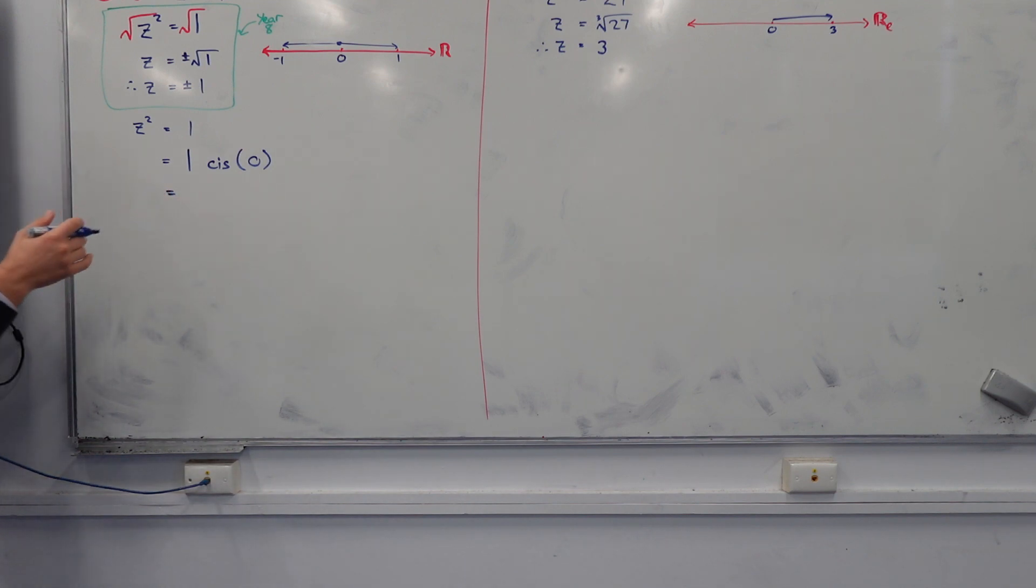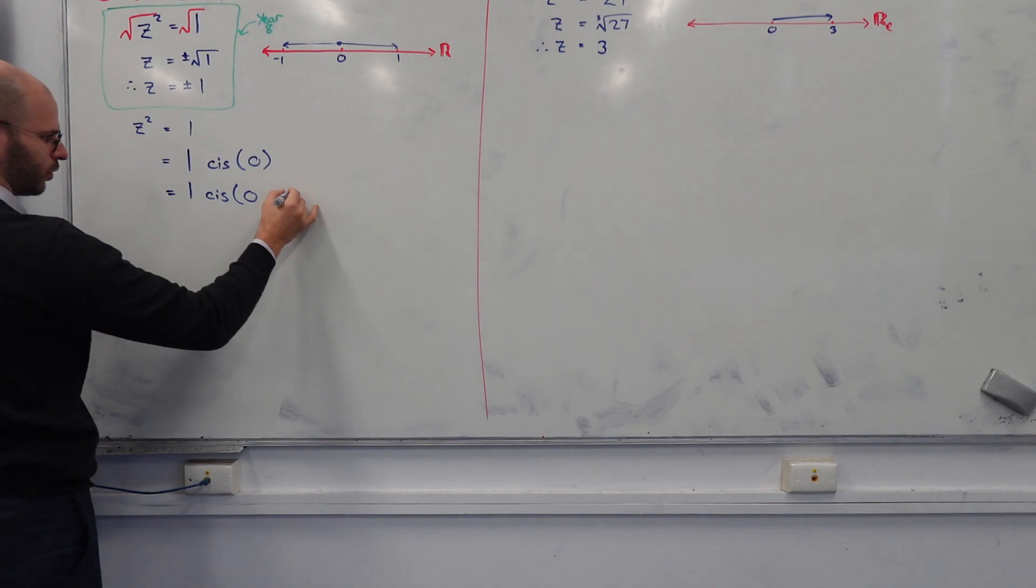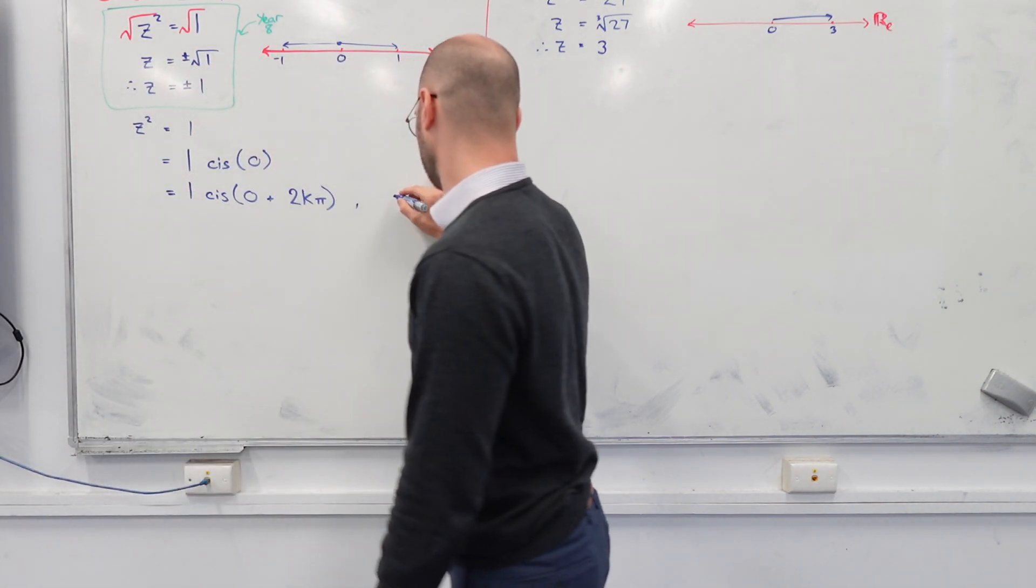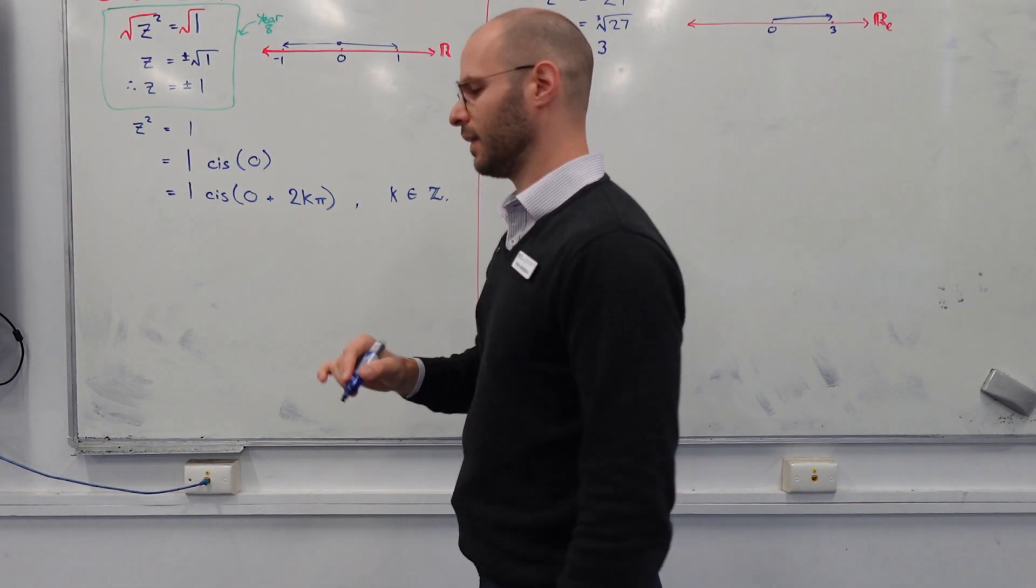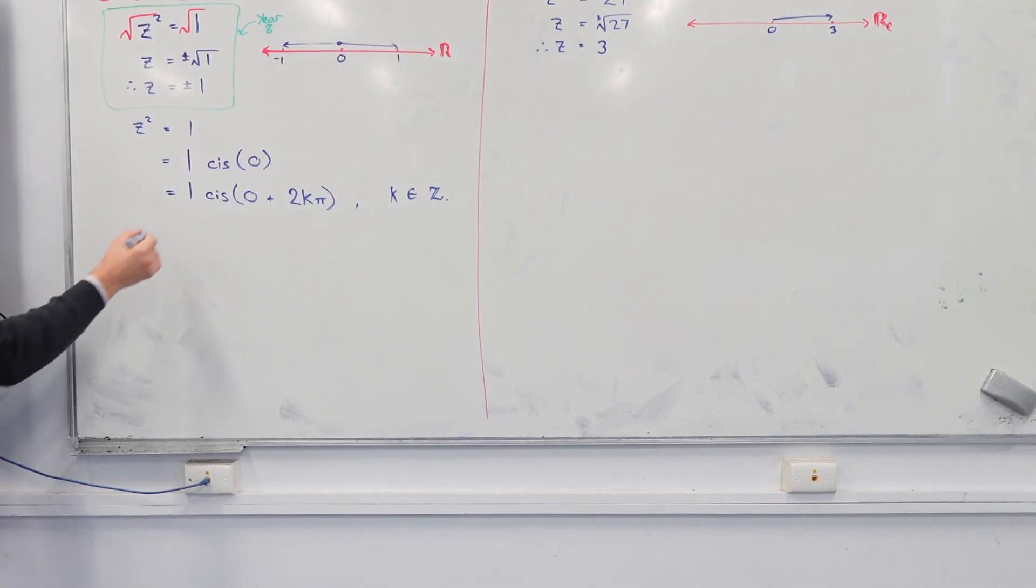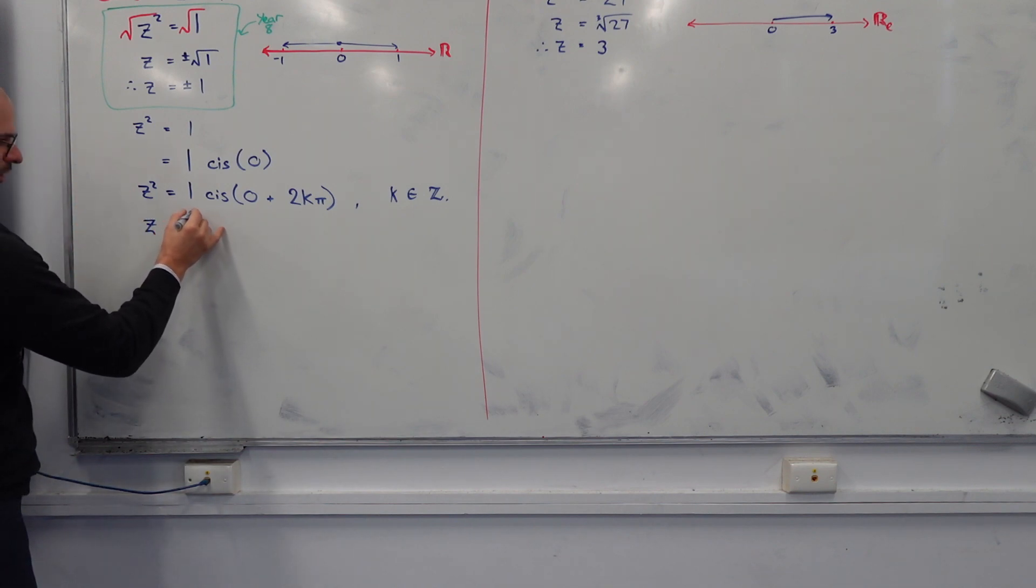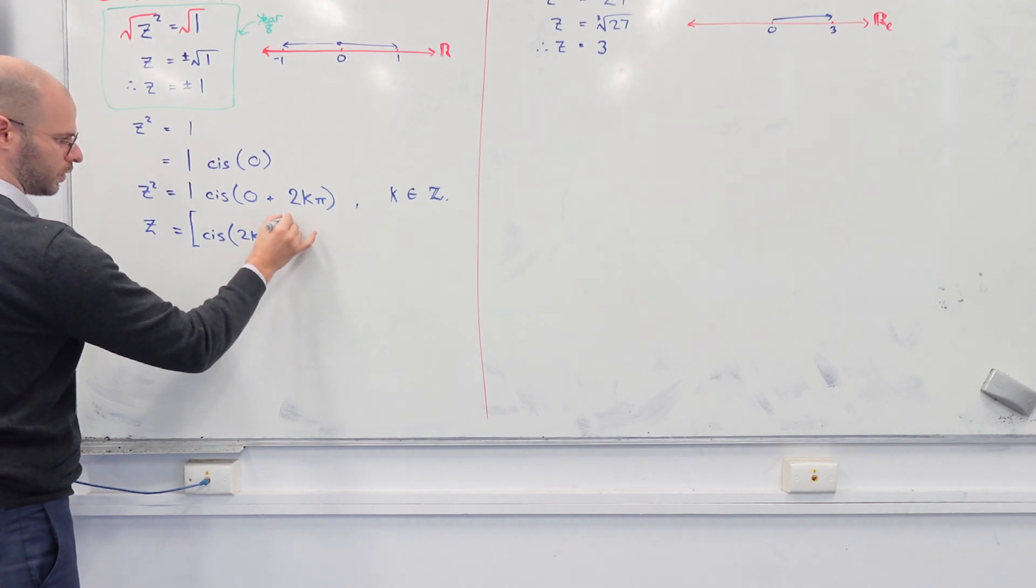So, in its polar form, 1 is over here, which means it's got a modulus of 1. It's got an angle, so cis of 0. Do we agree? Next. Let us get every possible solution, even if they're repeated. Let's go 1, cis 0, and then let's keep going around the circle. So we'll go plus 2k pi. Where k is going to be any integer number, even a negative one.